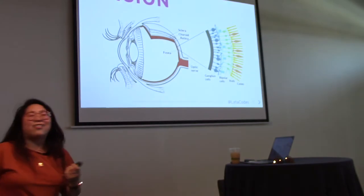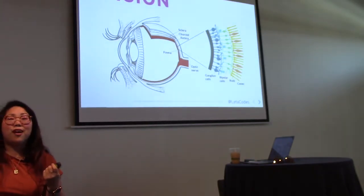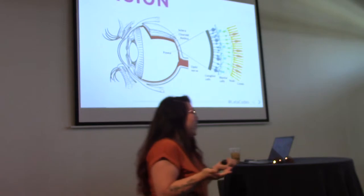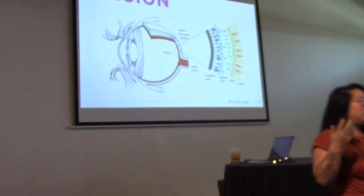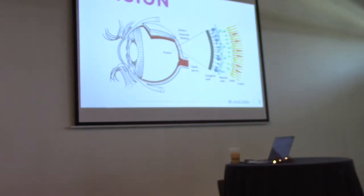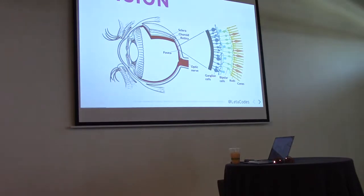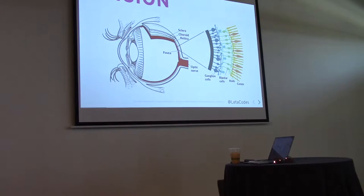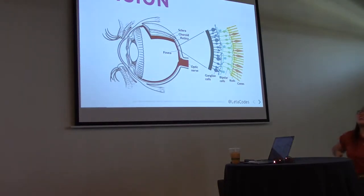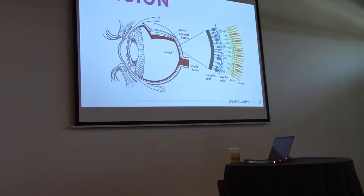Let's talk about the other half of color, which is vision. We wouldn't have any concept of color if we didn't have a means of perceiving it. Before I was teaching at a code school, I worked in a biology lab, and I also just generally love science. So the way vision works is light enters through the pupil here. It gets passed through the lens. Your eyeball actually has a kind of jelly lens inside of it.